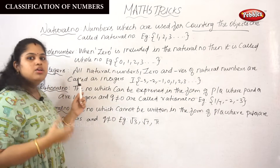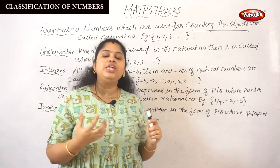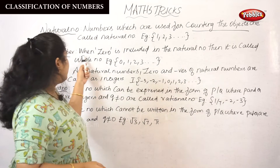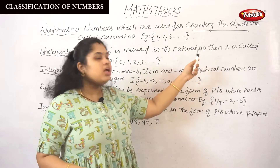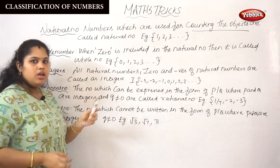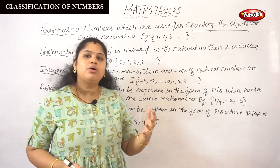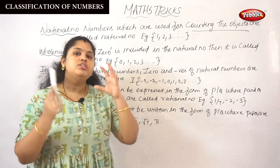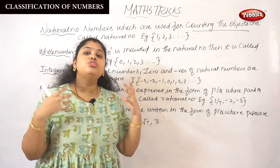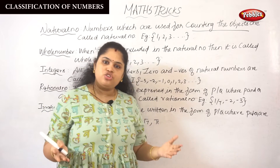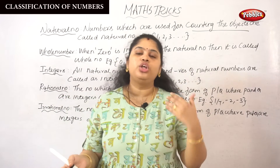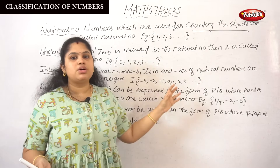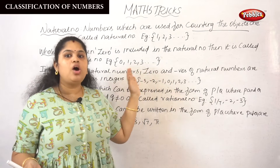Next, whole number. The name itself has meaning — whole number means it covers every number. When 0 is included in the natural numbers, it is called a whole number. Natural numbers are used for counting alone, whereas when we include 0 in the number system, it is called a whole number.